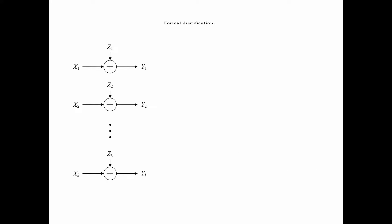A formal justification for the proposed formula for C of p is the following. Let pi equals the expectation of xi squared be the input power of the i-th channel. Consider the mutual information between the x vector and the y vector, which can be written as the differential entropy of the y vector minus the differential entropy of the noise vector. H of y is upper bounded by the summation i equals 1 to k of the differential entropy of yi, by the independence bound. And h of z equals the summation i equals 1 to k of the differential entropy of zi, because all the noise variables are independent.